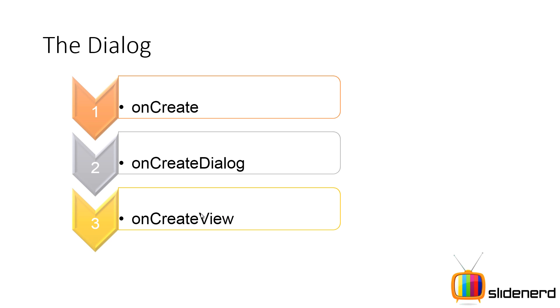Either use the older APIs and make the dialog inside onCreateDialog, or use the newer DialogFragment approach and make the layout inside your onCreateView method. You guys in the comment boxes below, let me know which method you prefer over the other.